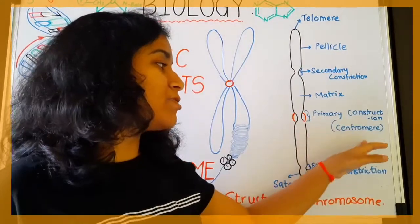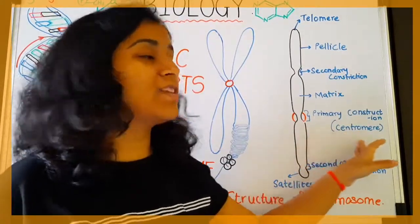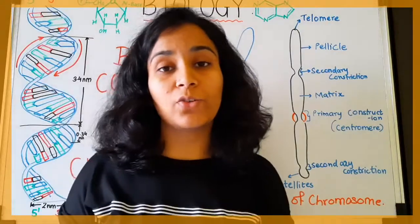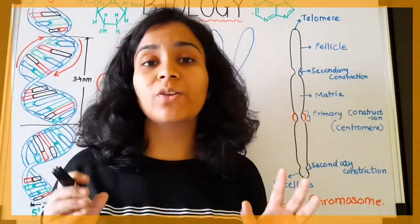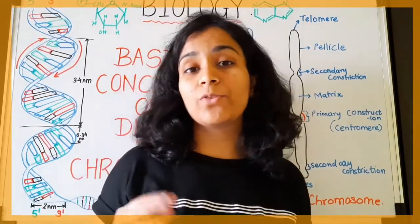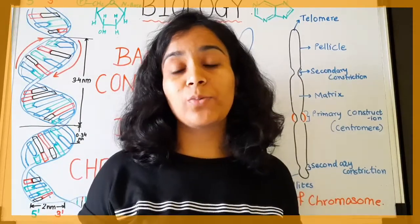The secondary constriction is also known as the nucleolus organizer because it helps in the formation of the nucleolus — not the nucleus, but the nucleolus. Then comes the primary constriction, where the centromere is present. The centromere, also called the kinetochore, helps in the attachment of spindle fibers during cell division, helps in movement of the chromosome, and also acts as a microtubule organizing center (MTOC).